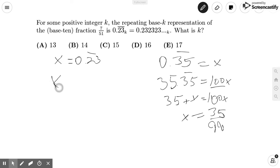So if we do this, we get k squared times x equals 23.23 repeating in base k.